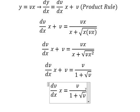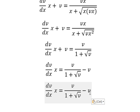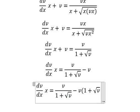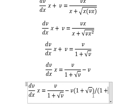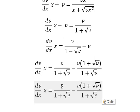Simplifying: dv/dx times x plus v equals v divided by 1 plus square root of v. Rearranging, we get dv/dx times x equals negative v square root of v divided by 1 plus square root of v.